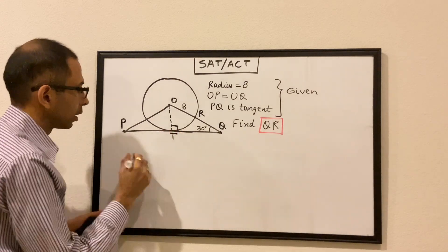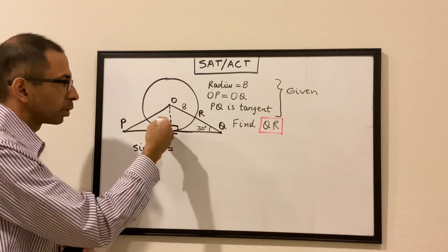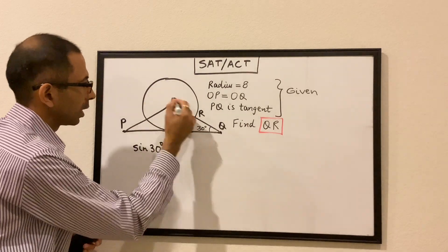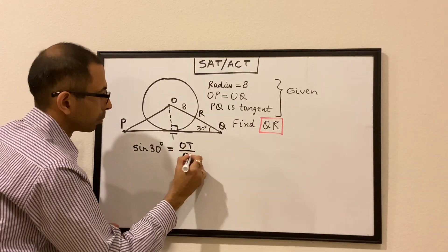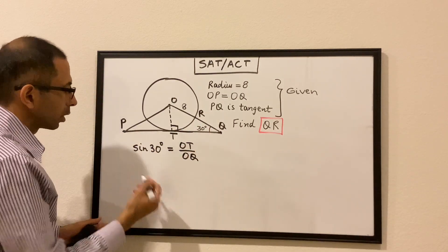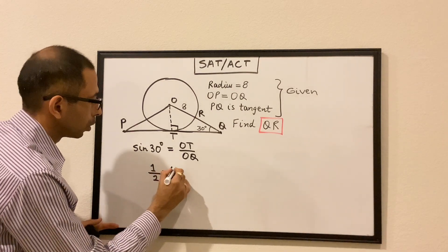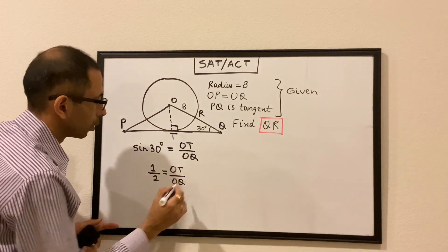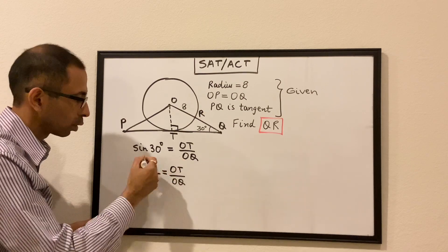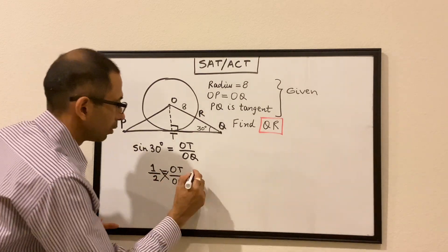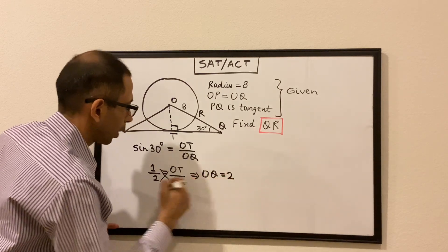We can use the sine of 30 degrees in this right angle triangle. Let's call this point T. Sine of an angle is opposite over hypotenuse, so in this case it will be OT over OQ. Sine of 30 degrees is one half, so one half equals OT over OQ. We cross multiply and get OQ is equal to twice of OT.